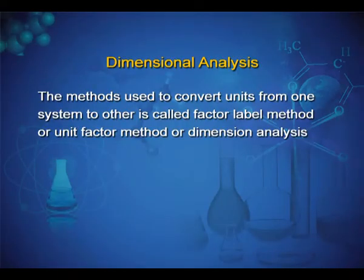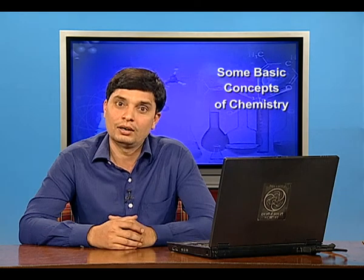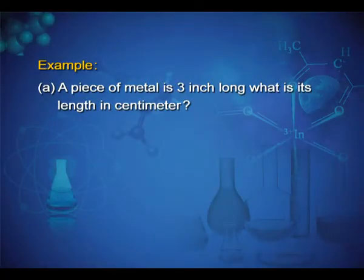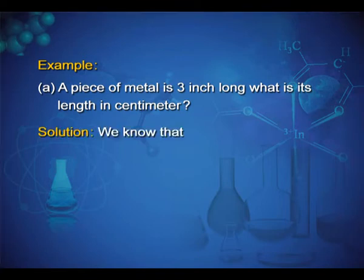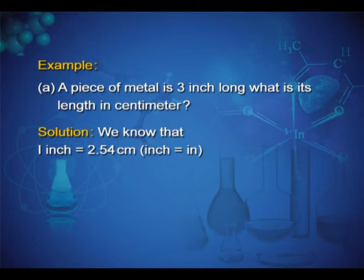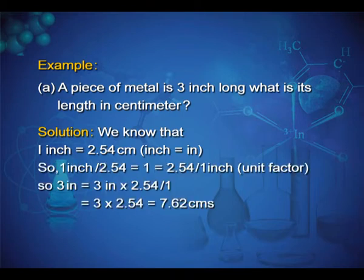Dimensional analysis: the method used to convert units from one system to another is called factor label method, unit factor method, or dimensional analysis. Example: a piece of metal is 3 inches long. What is its length in centimeters? We know that 1 inch equals 2.54 centimeters. So the conversion is 3 × 2.54 = 7.62 cm.